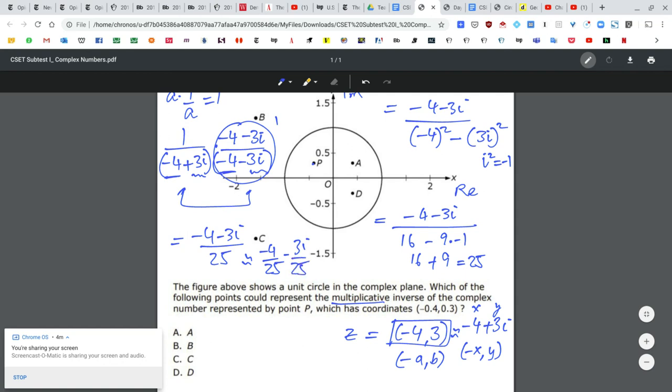In other words, in the complex plane, if I were to plot it, it's basically negative 4 over 25 comma negative 3 over 25, which is clearly in quadrant 3.